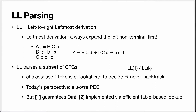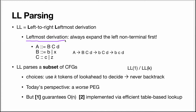So, LL parsing — what is it? What does LL mean? The first L is for left-to-right, which is just the direction in which we process the input. There also exist right-to-left parsing algorithms, but they're quite exotic and not often used. The second L stands for leftmost derivation. Derivation here is the kind we saw when talking about the semantics of CFG. In this context, leftmost derivation means that we are always going to expand the left non-terminal first.